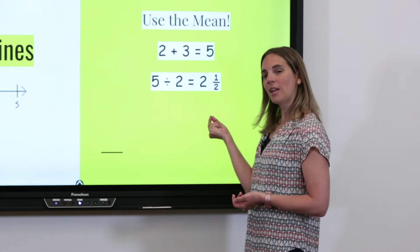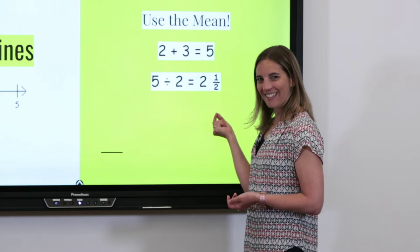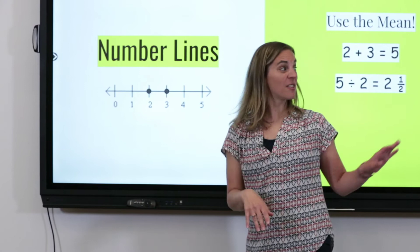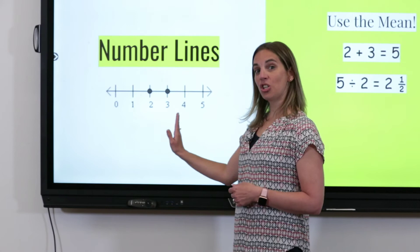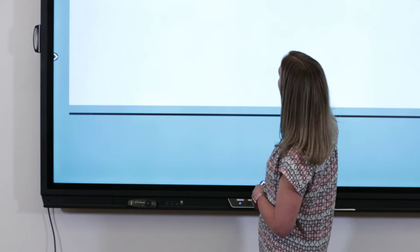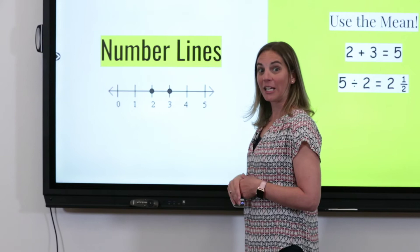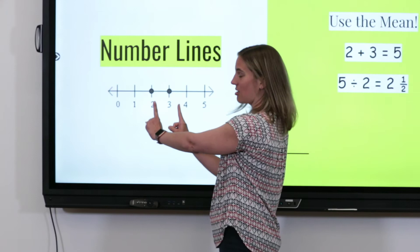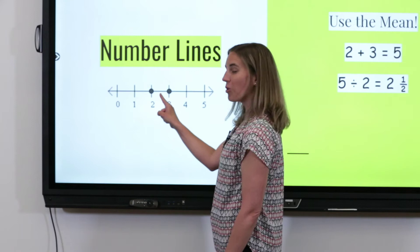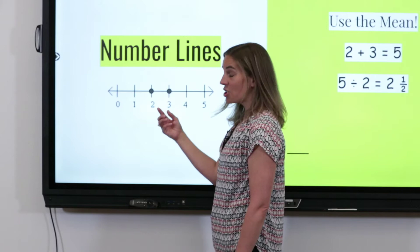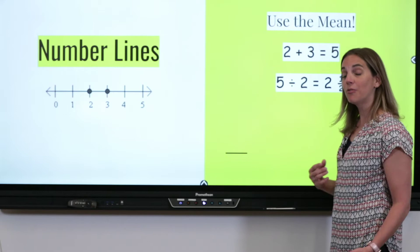Do you believe me? I know it's very weird, but look over here at our number line — this is another way you can do it if finding the mean is a little bit scary. On my number line I've plotted my points two and three. I'm going to put my fingers on each of those points and find where they meet right in the middle — this point right here, halfway between two and three, is two and a half. So right in the middle — that's my median. You can use either of those methods to find the median when you have an even set of data.